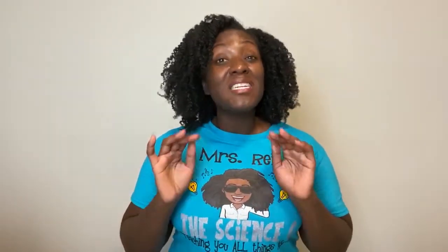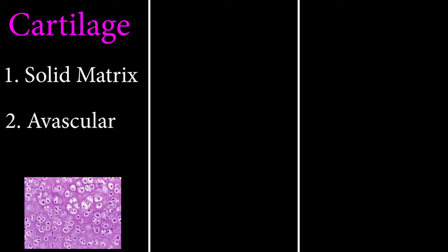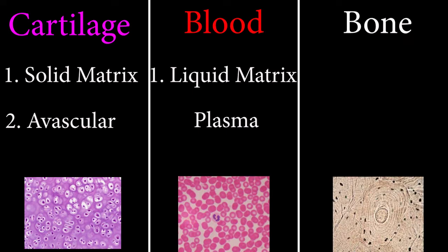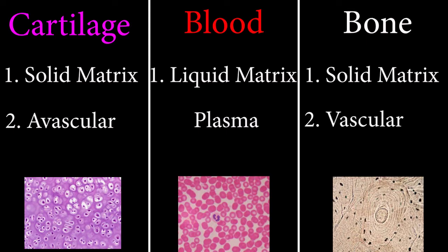Notice that cartilage has a solid matrix and no blood vessels. Blood has a liquid matrix called plasma. Bone has a solid matrix like cartilage, but it is vascular — meaning bone has a blood supply, so a broken bone can result in bleeding. Bone also has osteocytes (osteo means bone, cyte means cell) and osteons. The osteons remind me of rings in a tree trunk cross section — just as a tree trunk supports the tree, our bones provide support for our body.